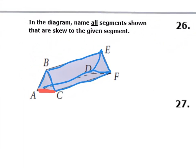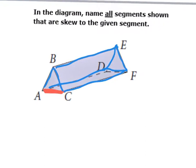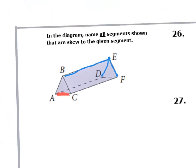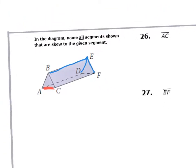Skew means things that are not parallel and cannot intersect. Looking at the figure, DE would be parallel to AC, so that's excluded. Also excluded is anything touching A — AB and AD — and anything touching C — BC and CF.